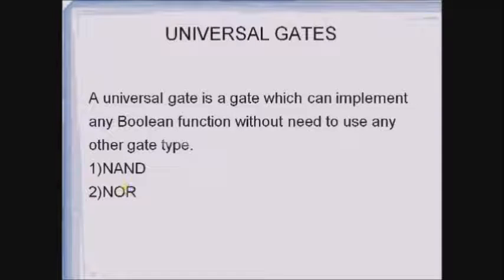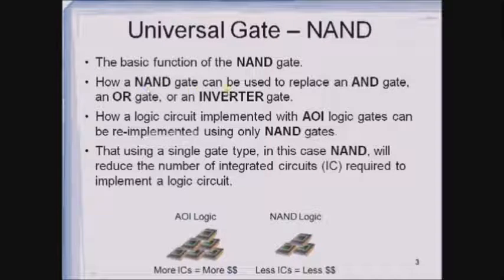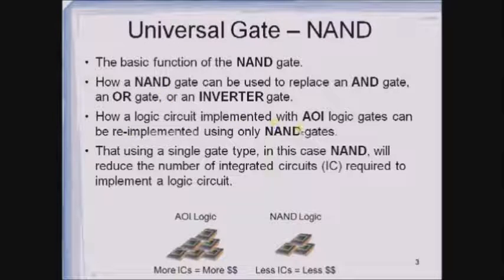NAND and NOR are called as universal gates. In this session we will see how to realize any kind of boolean expression with the help of NAND and NOR gates. We will start our discussion with the universal gate NAND, covering its basic function, symbol, how it works, its truth table, and how a NAND gate can be used to replace an AND gate, an OR gate, or an inverter. We will also see how a logic circuit implemented with AOI (AND OR Inverter) logic gates can be re-implemented using only NAND gates.